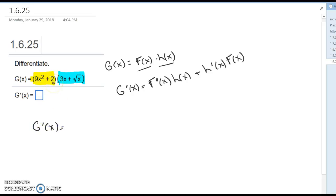So here we're gonna take the derivative of the first function, so this would be 18x, hold the second function, plus the derivative of the second function, which would be 3 plus 1 half x to the minus 1 half times the first function.